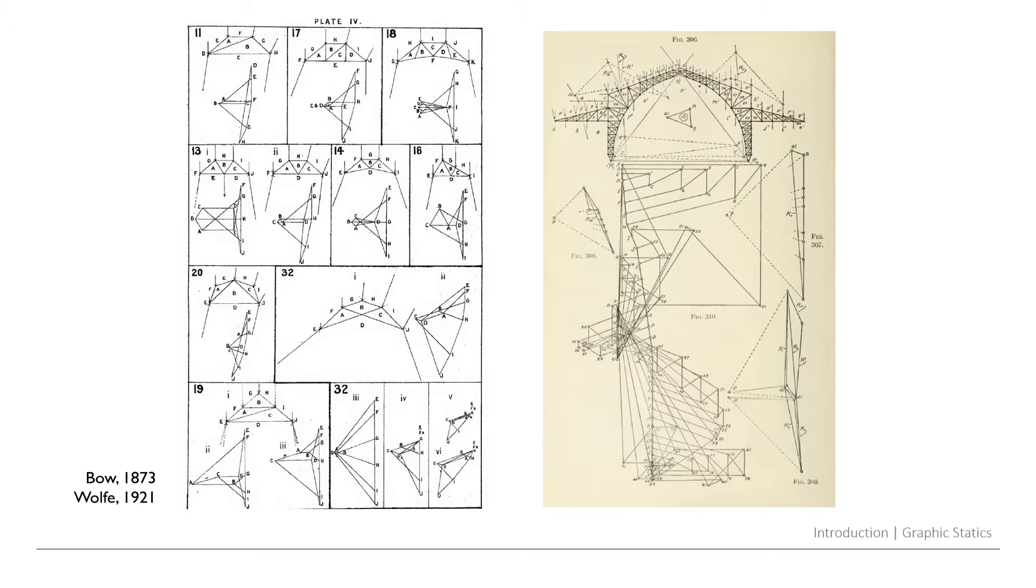In the form diagram they represent the two-dimensional truss under external loading, and given such a form diagram a force diagram can be constructed where one of the edges represents the magnitude of the internal force. However, that is not only a very visual way of understanding the internal forces in their distribution, but it's also a way of rather than starting to design from the form domain, start to design directly in the force domain and see what form in static equilibrium is going to be the result.